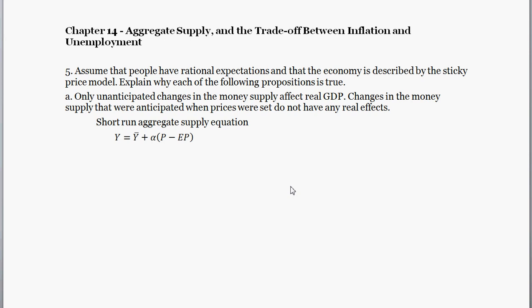In this question, we're going to deal with the sticky price model. Firms choose production based on expected prices or where current prices deviate from expected prices. So if current prices deviate from their expectations, they adjust production. This is question 5 from Chapter 14. Assume that people have rational expectations and that the economy is described by the sticky price model. Explain why each of the following propositions is true, and we're just going to do A here. A says, only unanticipated changes in the money supply affect real GDP. Changes in the money supply that were anticipated when prices were set do not have any real effects.